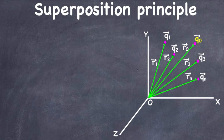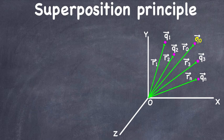In this video I'm going to go over the superposition principle, which states that when a number of charges are interacting, the total force on a given charge — let's say Q naught — is the vector sum of the forces exerted on this charge due to all other charges.